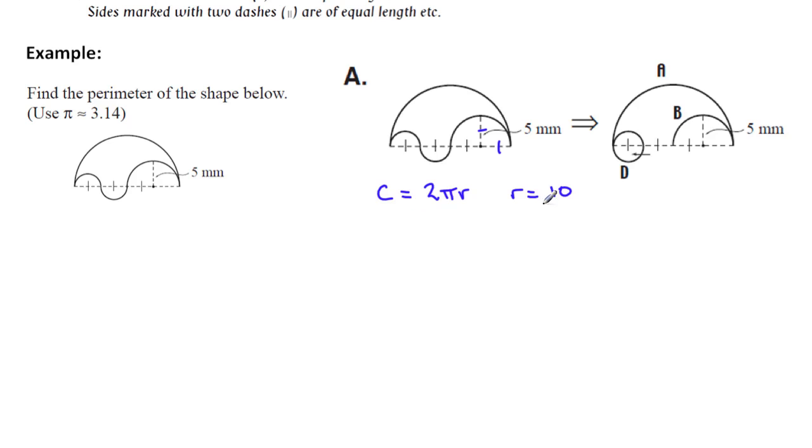All right, so we've got this formula. We'll substitute it in and we get 2 times, now, we're going to use 3.14 here when we type this in. Not our calculator π, just this one here. And we'll multiply that by 10 and our answer comes out to be 62.8, and that's millimeters.